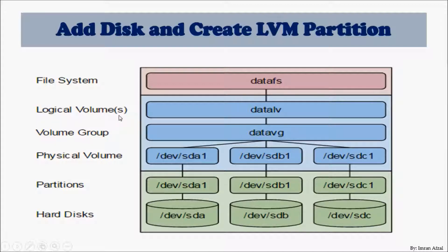This volume group will represent all the physical volumes coming out of those disks. Then we will create logical volumes. Once we have the logical volume, it will work exactly the same as a standard partition, but of course it will be under LVM. Then we're going to mount those logical volumes to our file system. This is how it works.